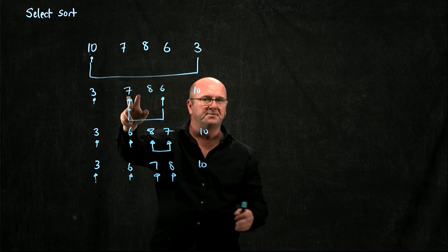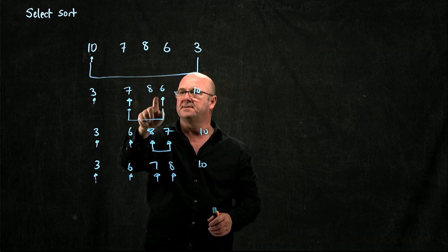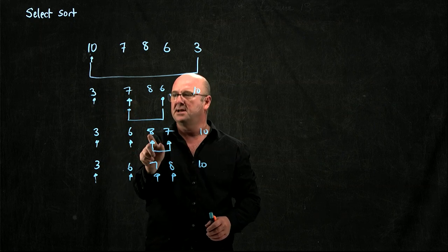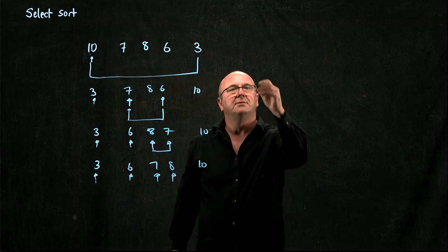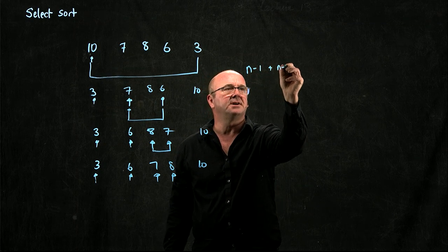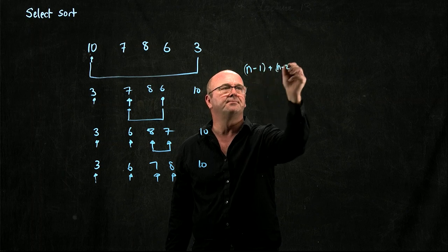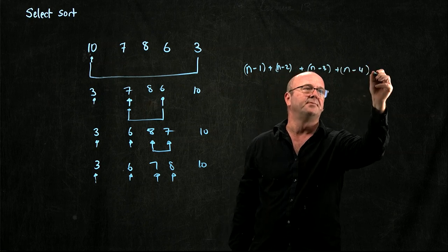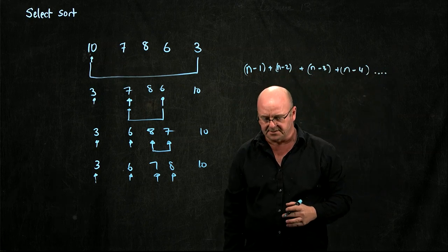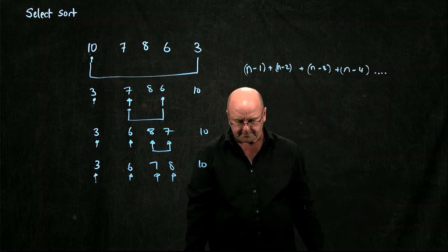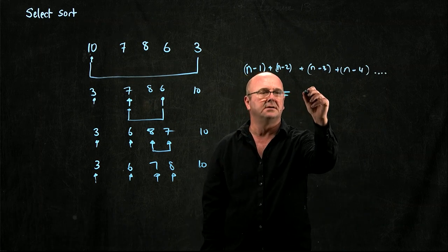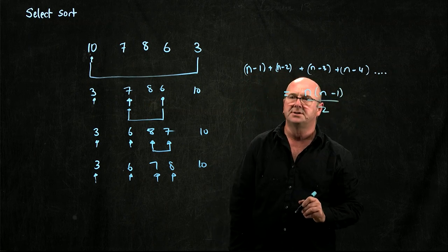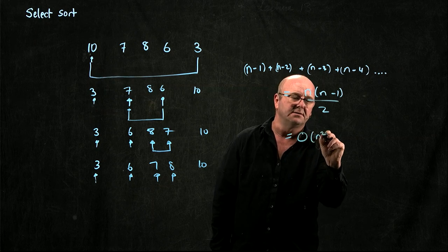Then in the second case, we've moved over 1, so now we have to do n-2 comparisons. Then in the third case, we do n-3 comparisons. And so we're doing n-1, plus n-2, plus n-3, plus n-4, all the way up until we have just two comparisons left. This, of course, is n times (n-1) over 2, which is O(n²).